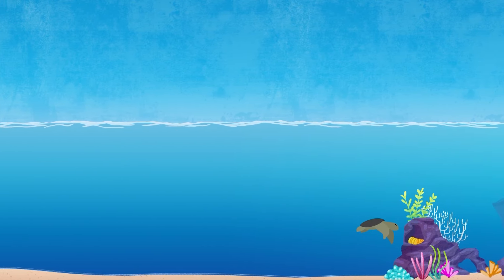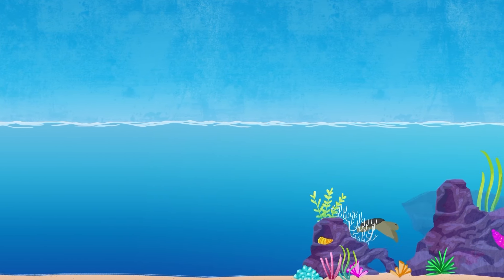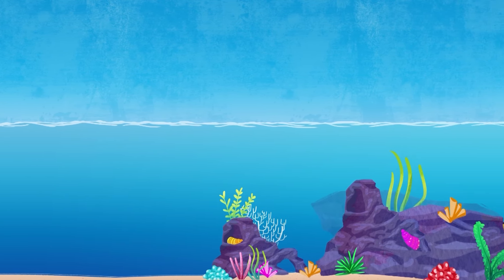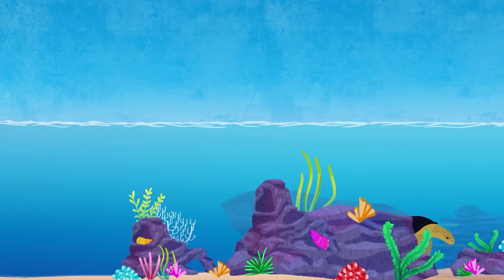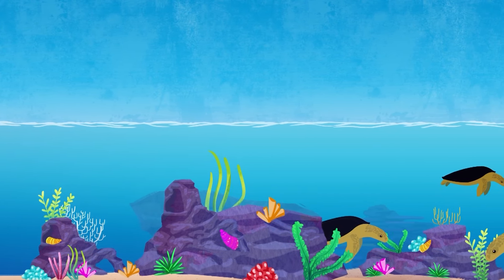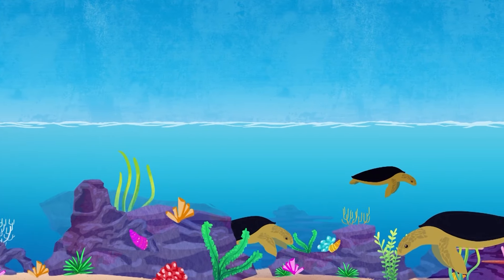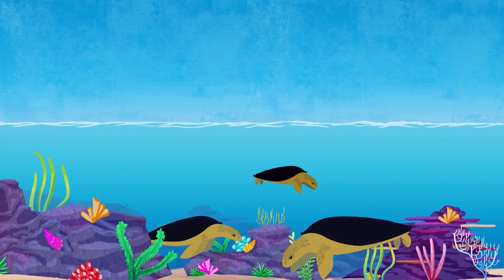The first years of a turtle's life will be met with drifting ocean currents and eating surface plankton. Their journey for the following ten years is described as the lost years. It is estimated that only one in one thousand turtles reaches adulthood.